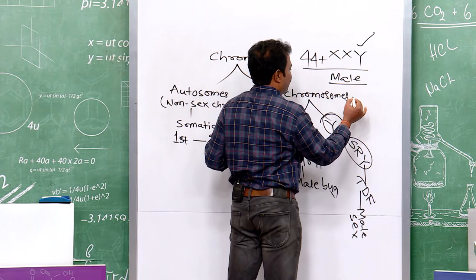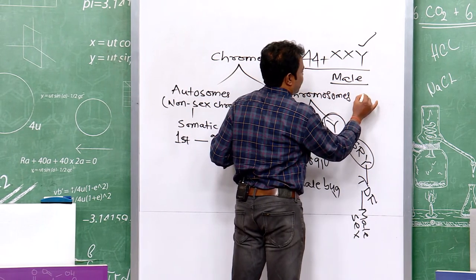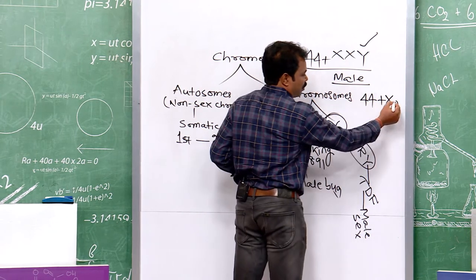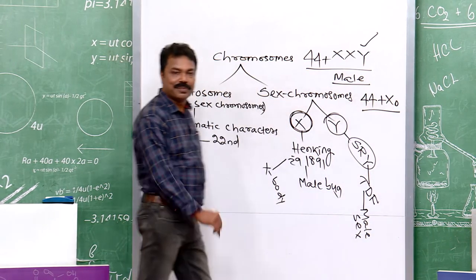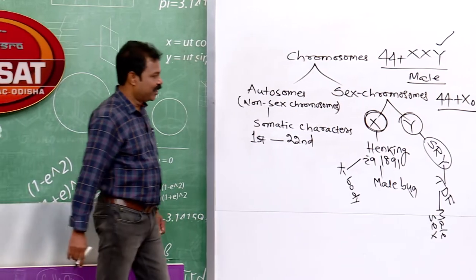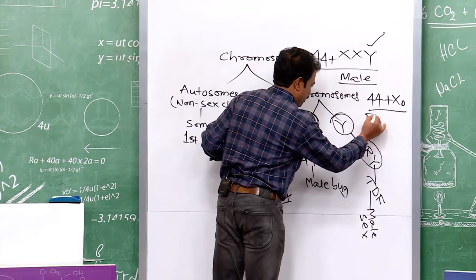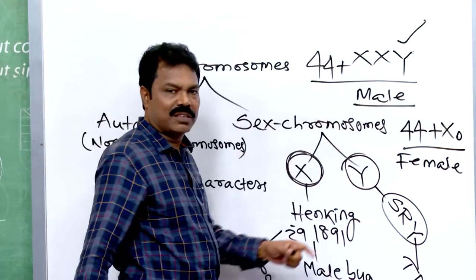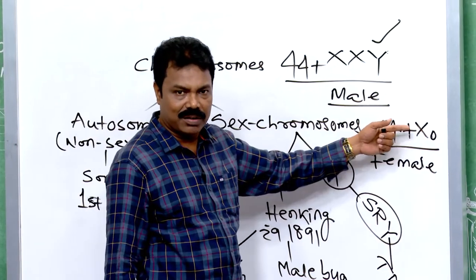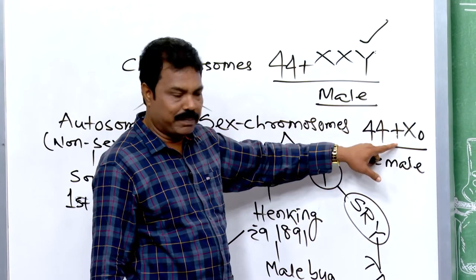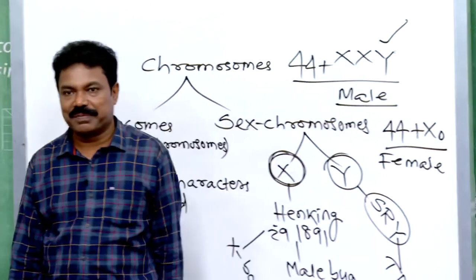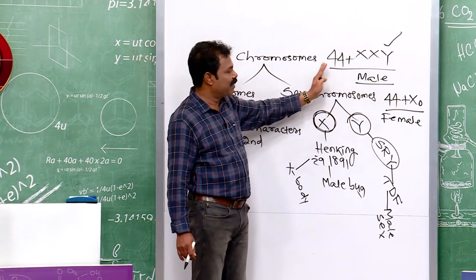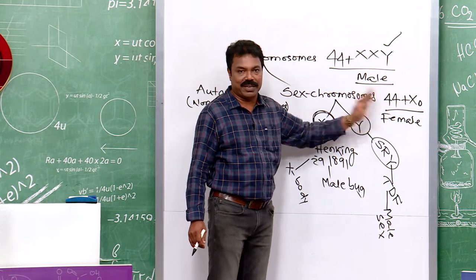An individual with genotype 44+X0 is definitely female — not because the X chromosome is present, but because the Y chromosome is absent. The 44+XXY genotype is Klinefelter syndrome — a sterile male. The 44+X0 genotype is Turner syndrome — a sterile female.